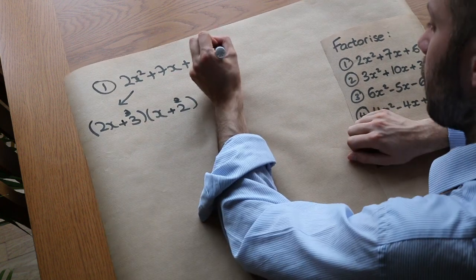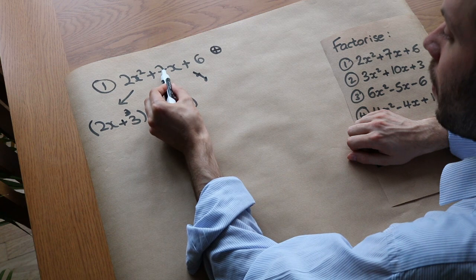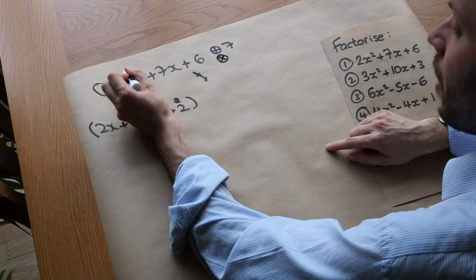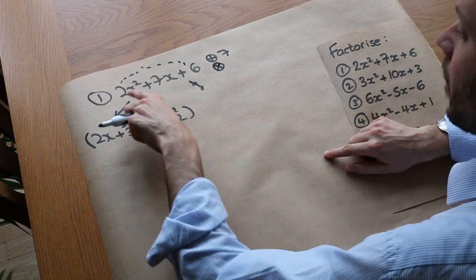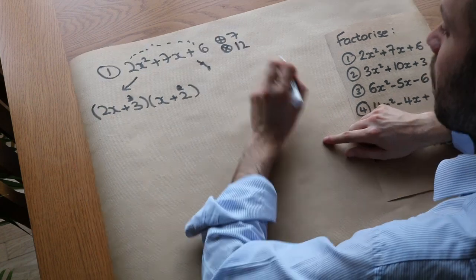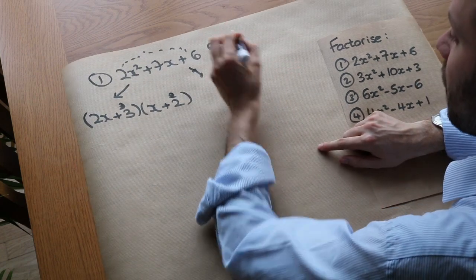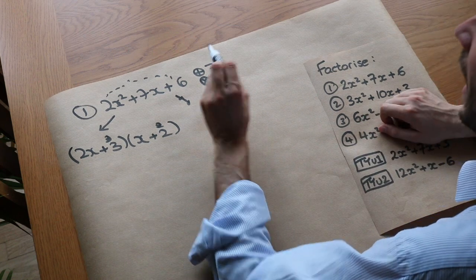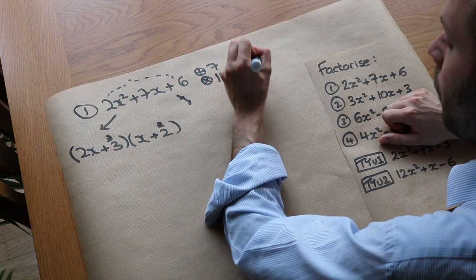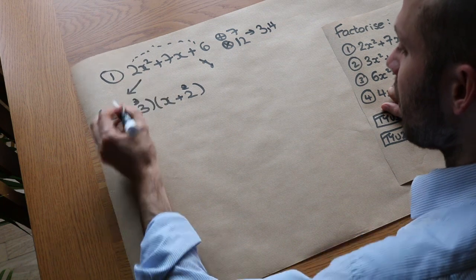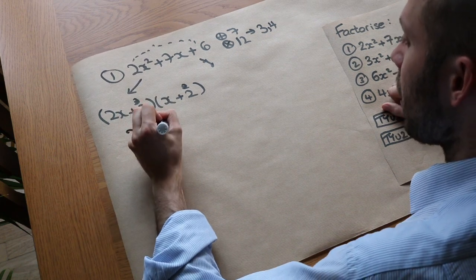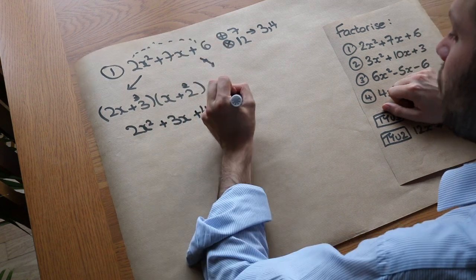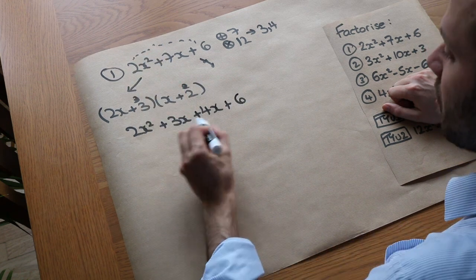Or if we want to split the middle term, we need two numbers that add to give the middle number 7 and multiply to give the first times the last number: 2 times 6 is 12. We need two numbers which add to give 7 and multiply to give 12 — that's 3 and 4, since 3 times 4 is 12 and they add to give 7. So we split that middle term into 2X squared plus 3X plus 4X plus 6. It doesn't matter which way you put those numbers round.